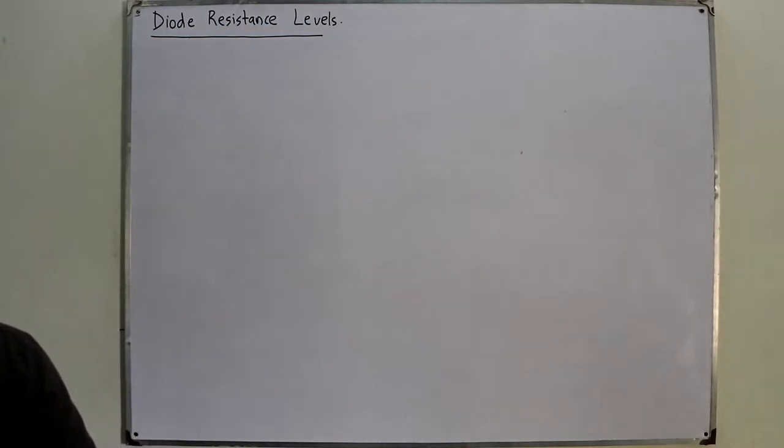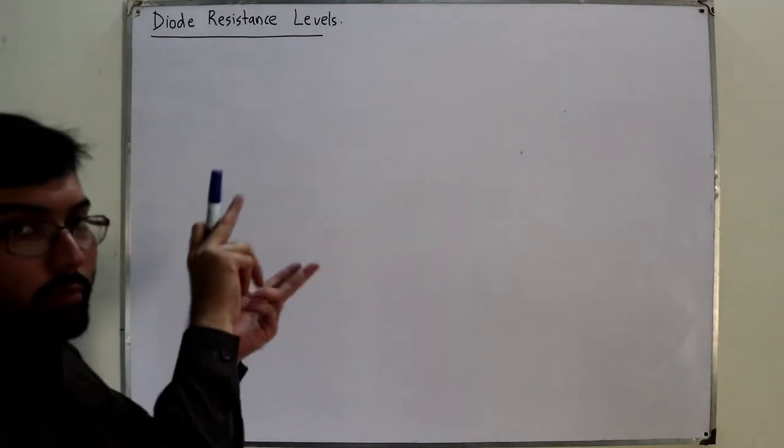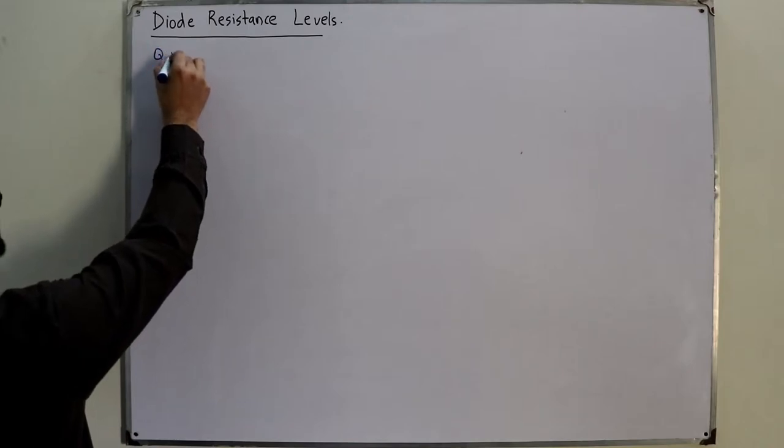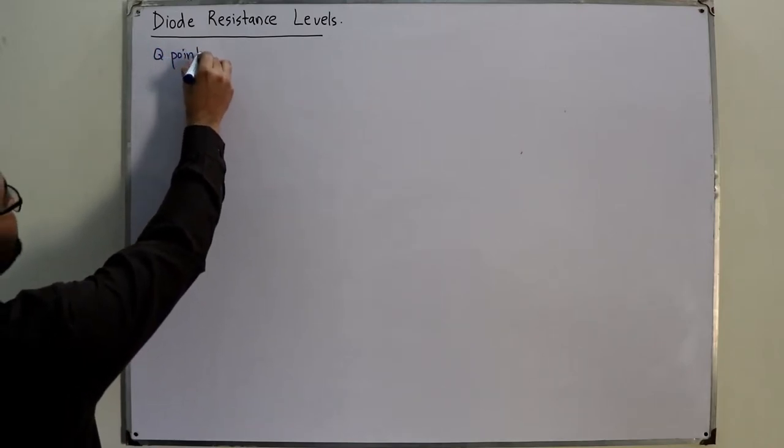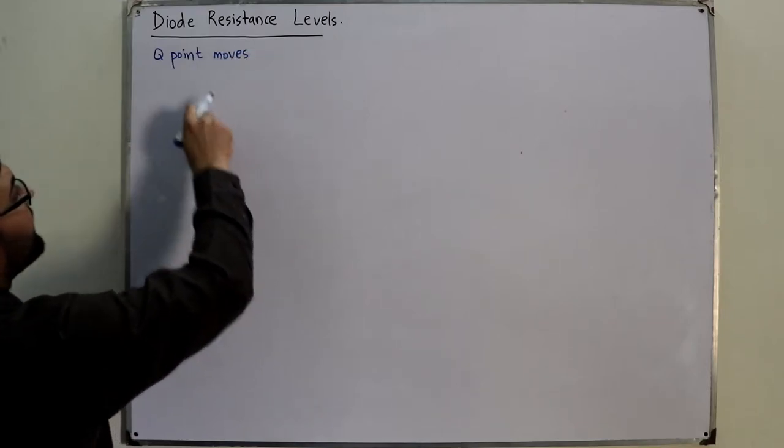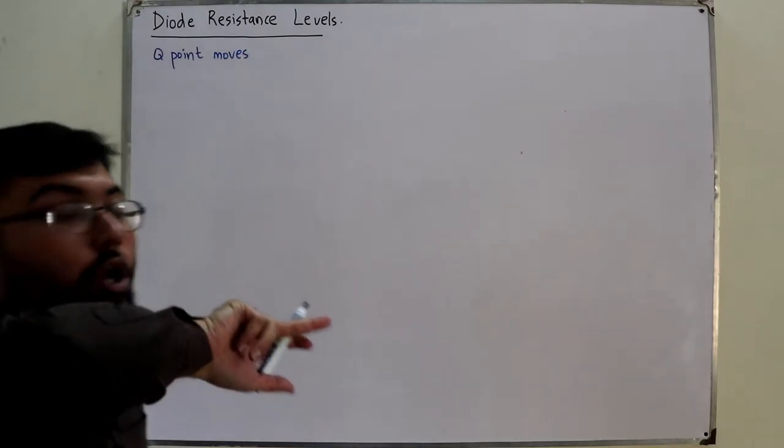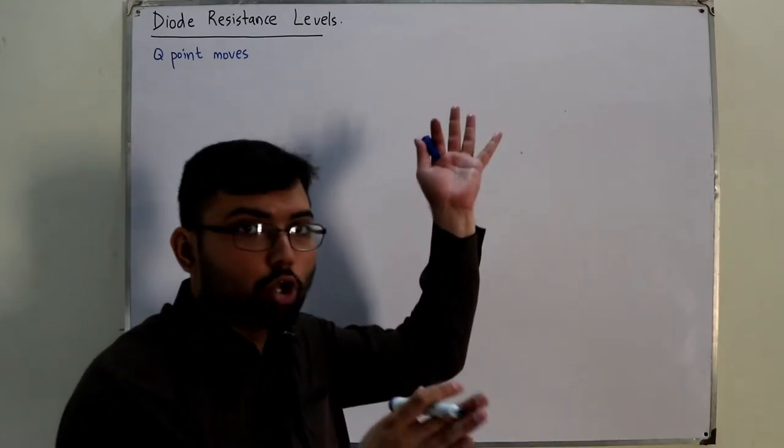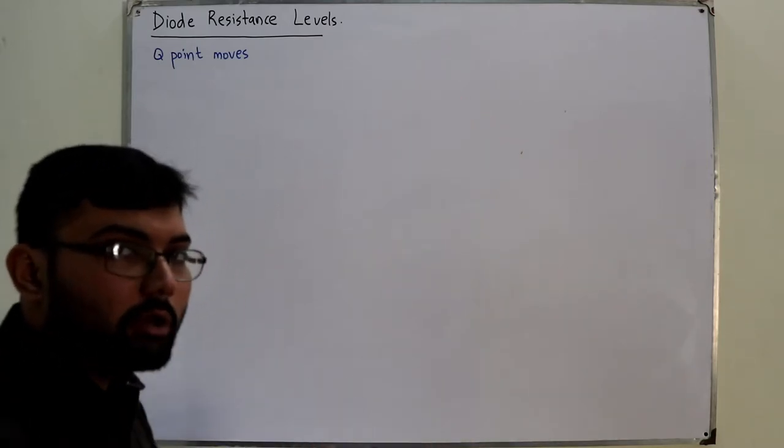The diode will offer resistance to the flow of current. As the operating point moves, as the Q-point of the diode moves up and down, you know from the external resistance and the slope from the previous video.